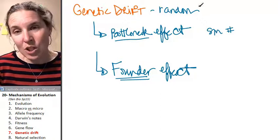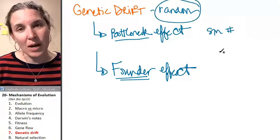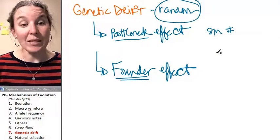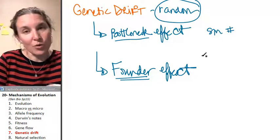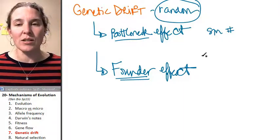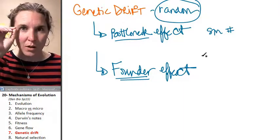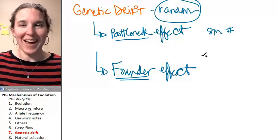The key with genetic drift is that it's a random process, as opposed to flow where we actually have a group coming into a population or a group leaving and affecting the allele frequency that way.